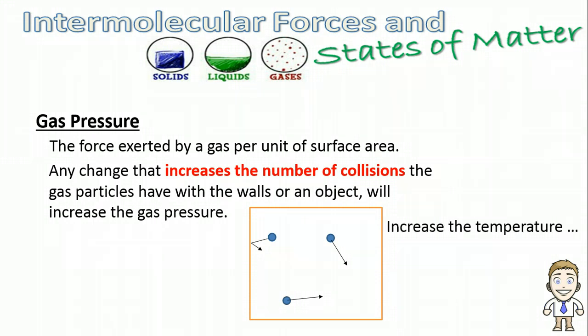The first change we're going to talk about is increasing the temperature of these particles. Hopefully everybody knows when you raise the temperature of a sample of matter, all you do is make the particles move faster. We represent this increased speed with longer arrows. If you think about it, if the particles are moving quicker, they're going to collide with the walls of this container more. More collisions equals more pressure, so increasing the temperature of a gas will raise the pressure.